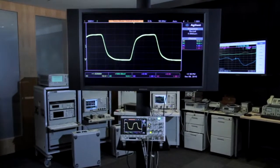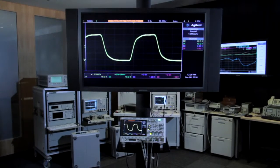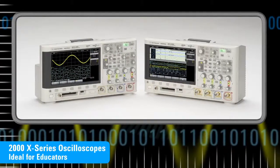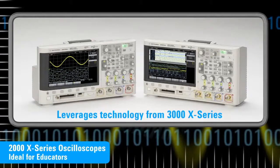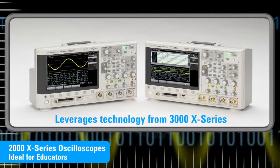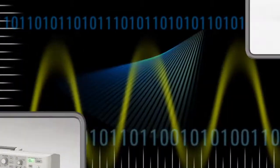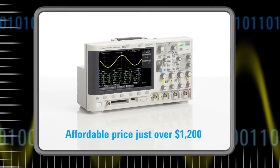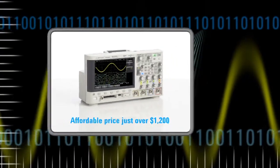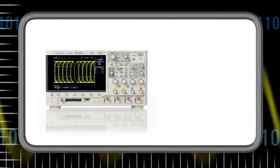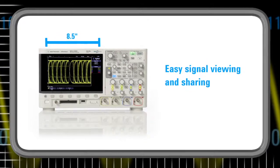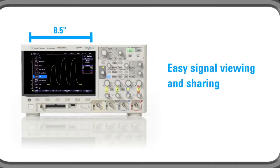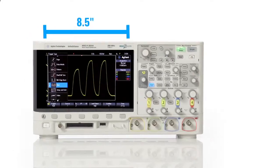The new 2000X series is an ideal product family for education for several reasons. First and foremost, it leverages all of the advanced technology from the new 3000X series of products at a very affordable price point beginning at just over $1,200. These products feature a large 8.5-inch widescreen display for very easy signal viewing and sharing among multiple students at a laboratory workbench.